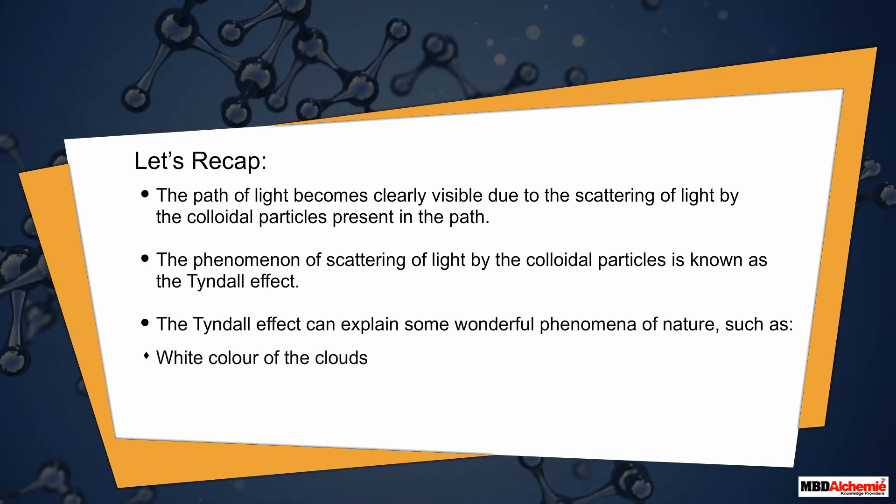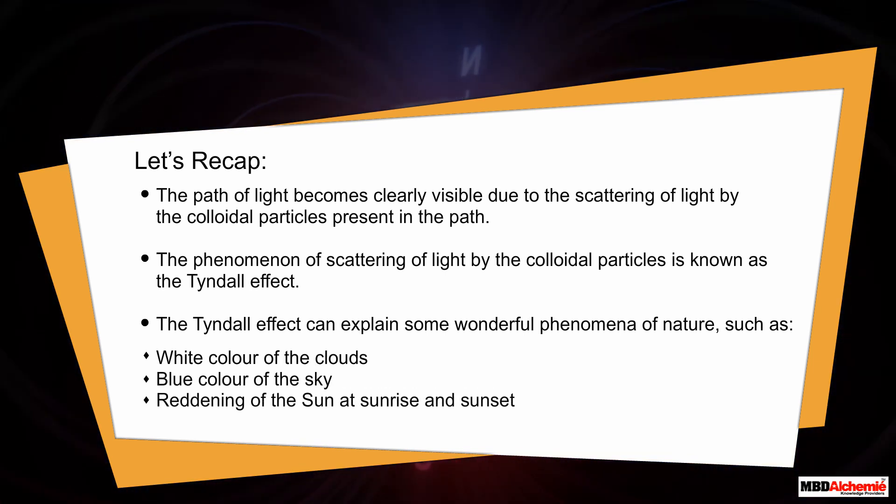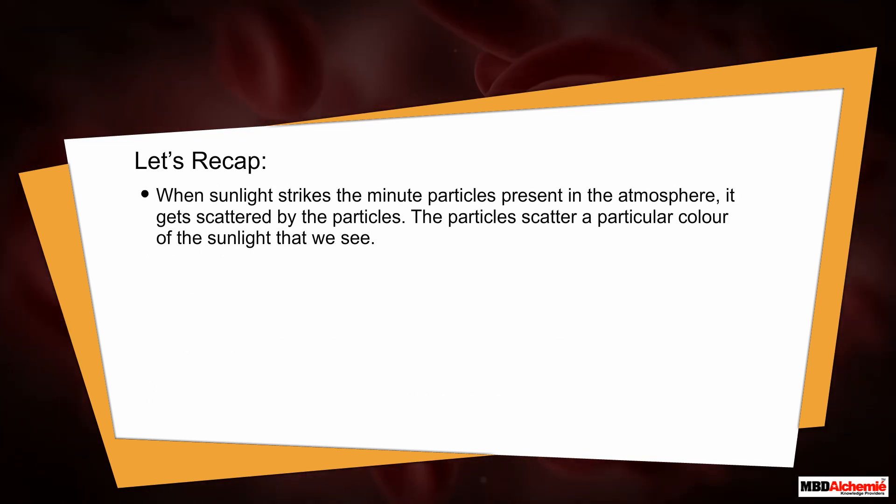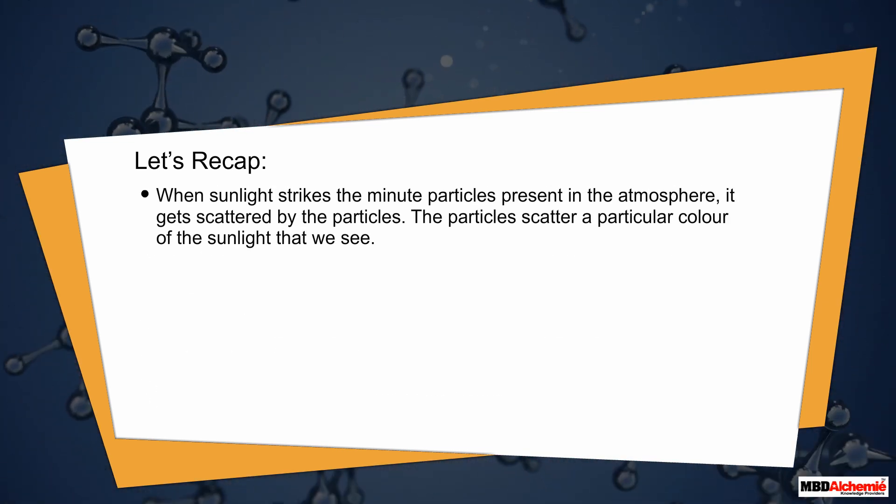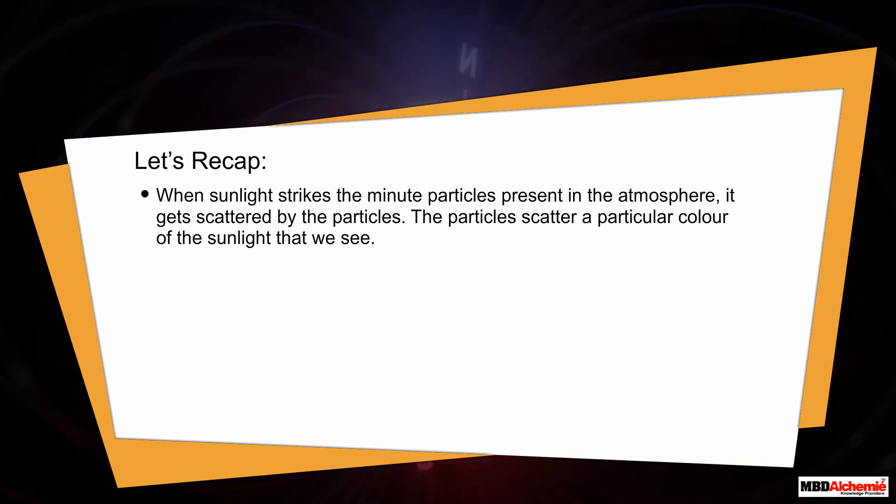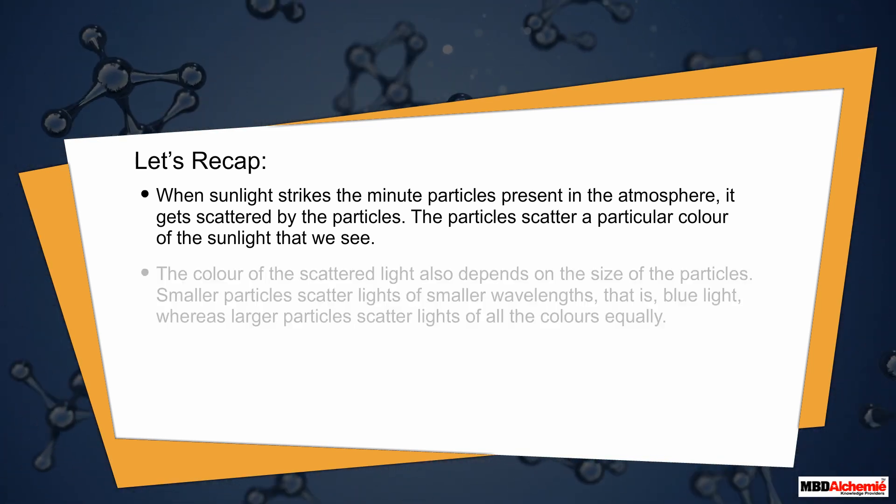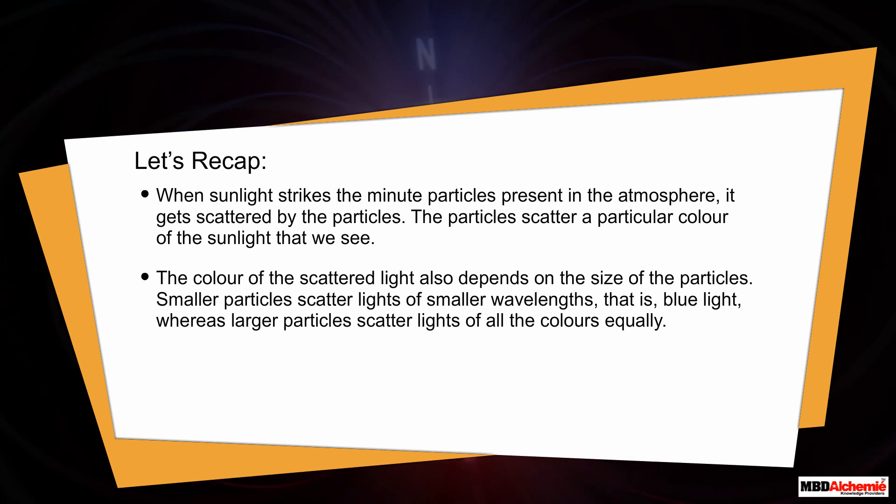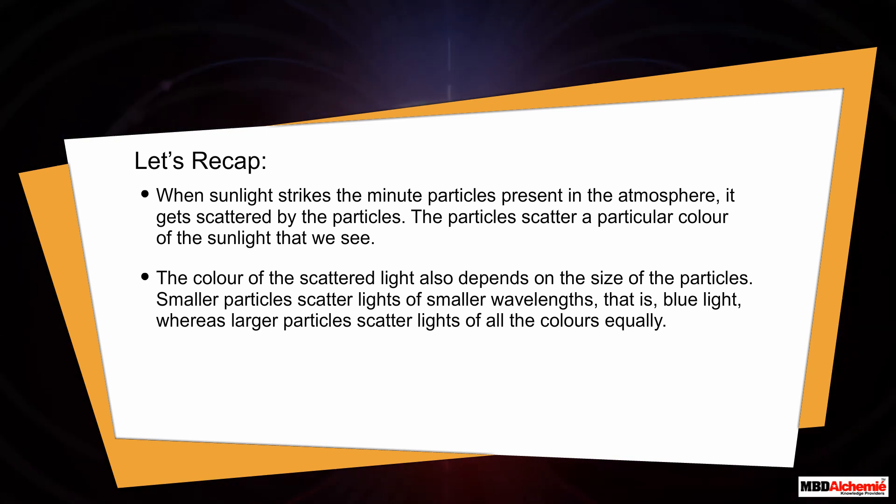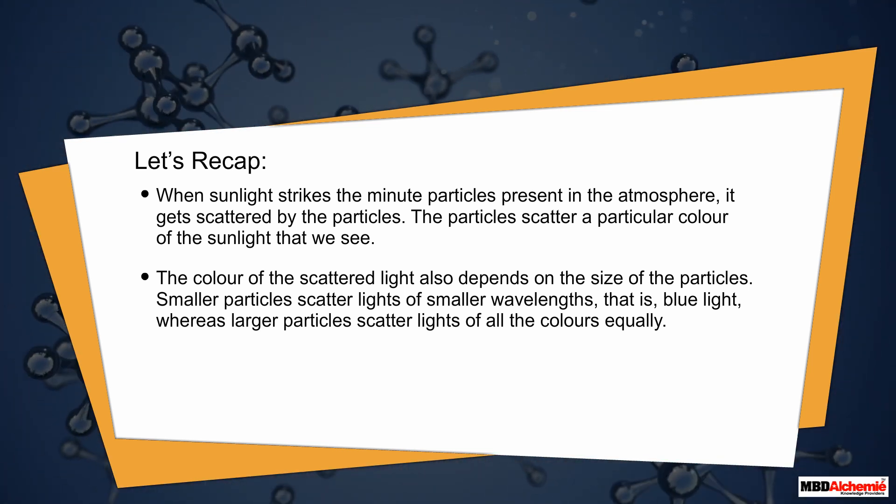The Tyndall effect can explain some wonderful phenomena of nature, such as white color of the clouds, blue color of the sky, and reddening of the sun at sunrise and sunset. When sunlight strikes the minute particles present in the atmosphere, it gets scattered by the particles. The particles scatter a particular color of the sunlight that we see. The color of the scattered light also depends on the size of the particles. Smaller particles scatter lights of smaller wavelengths, that is, blue light, whereas larger particles scatter lights of all the colors equally.